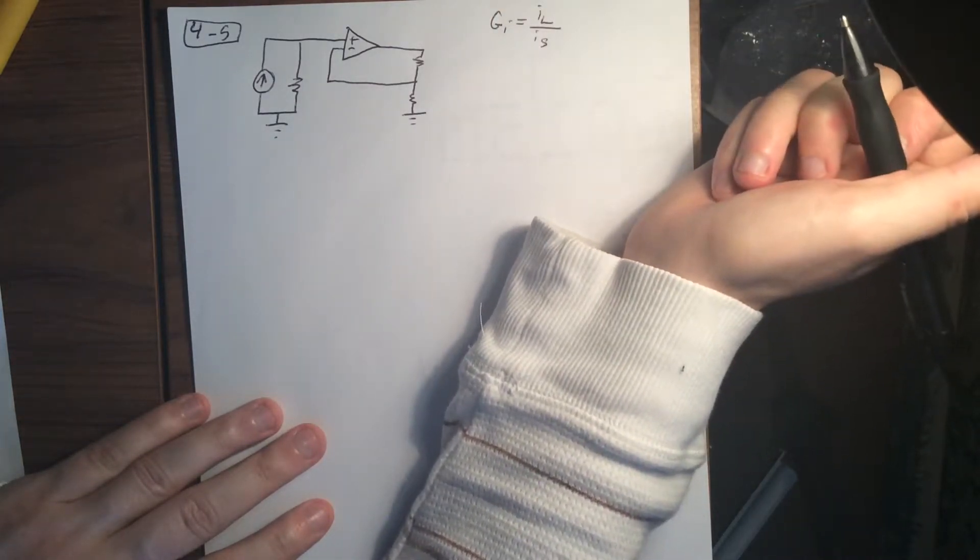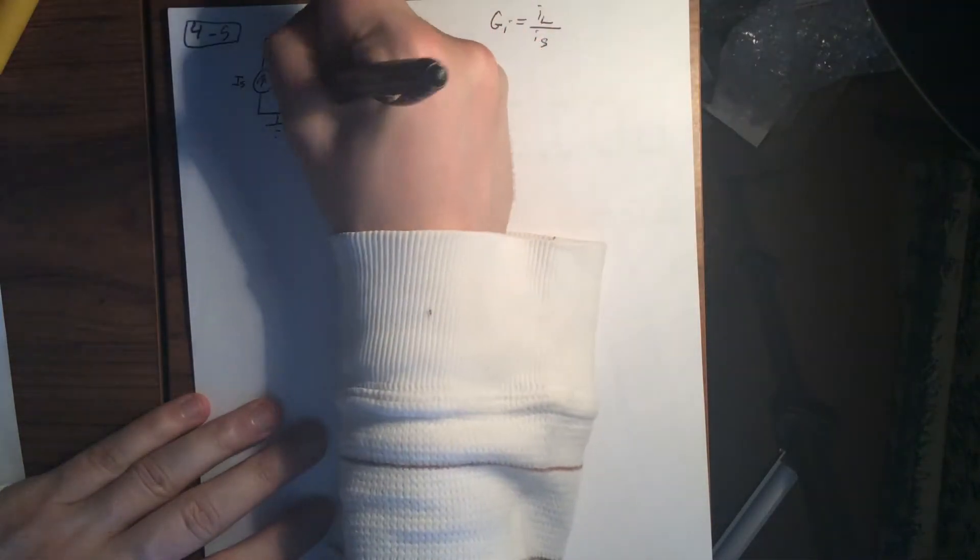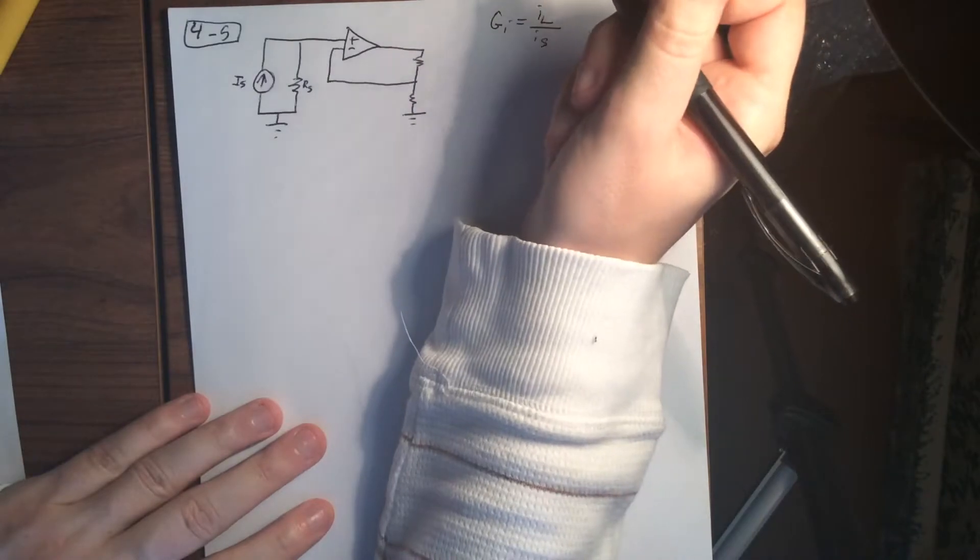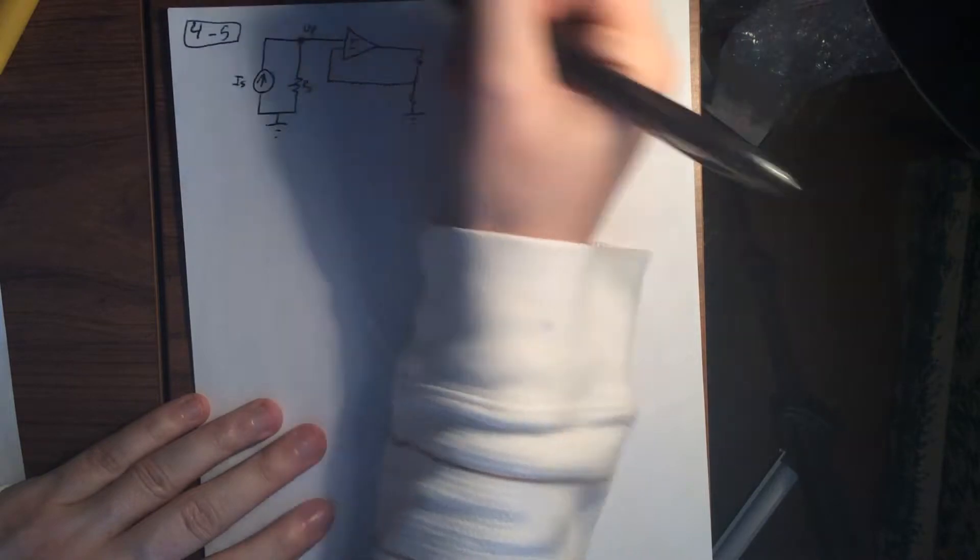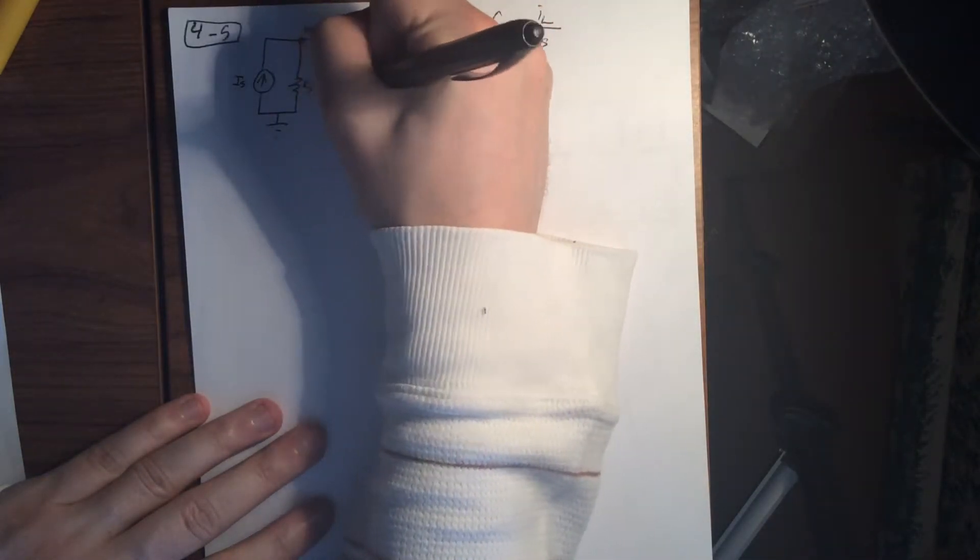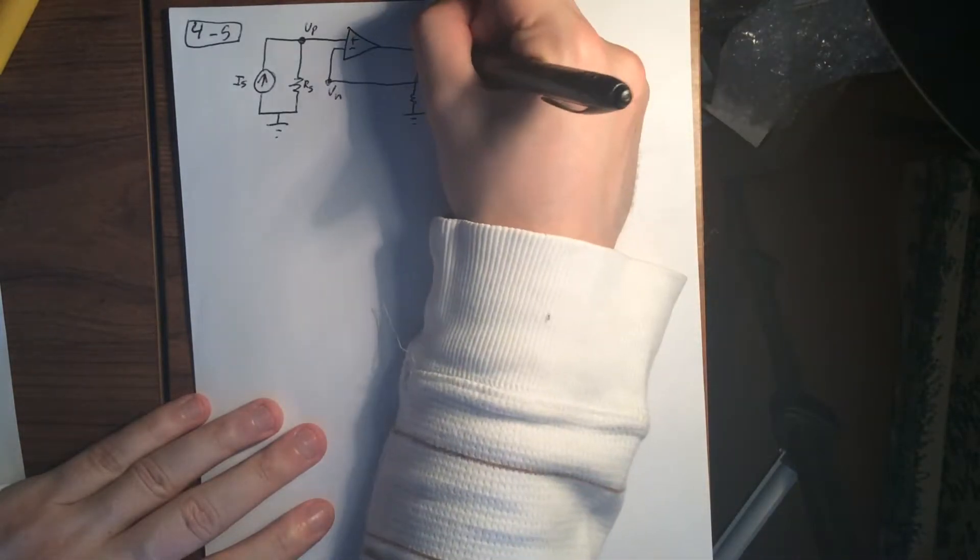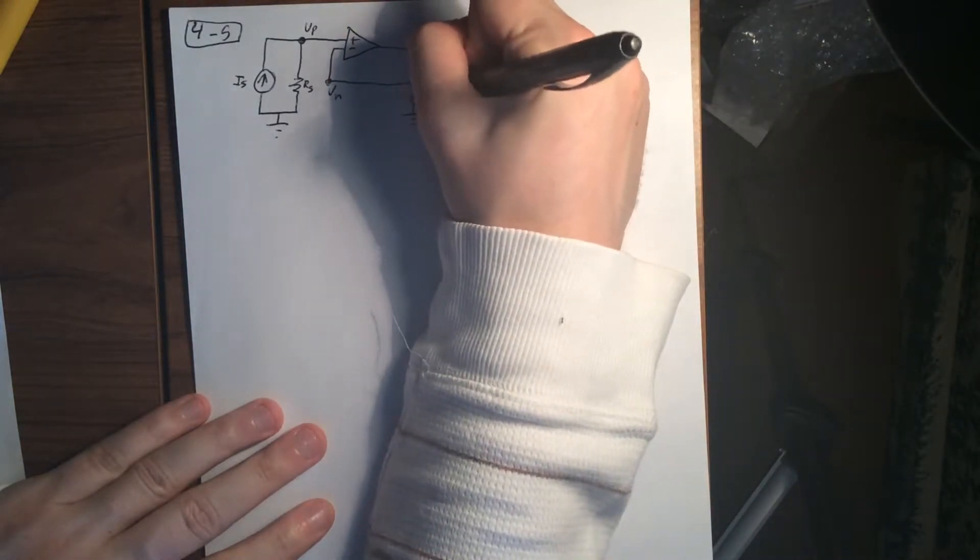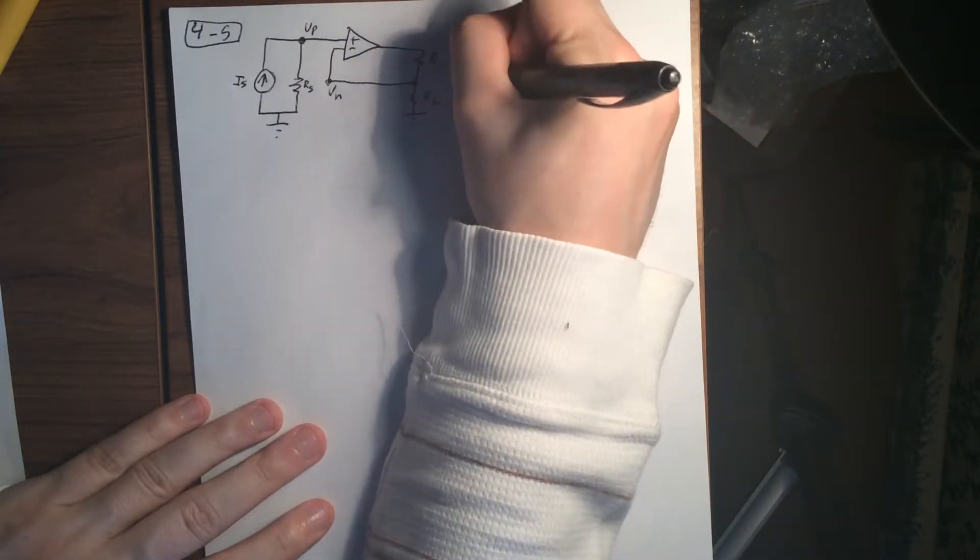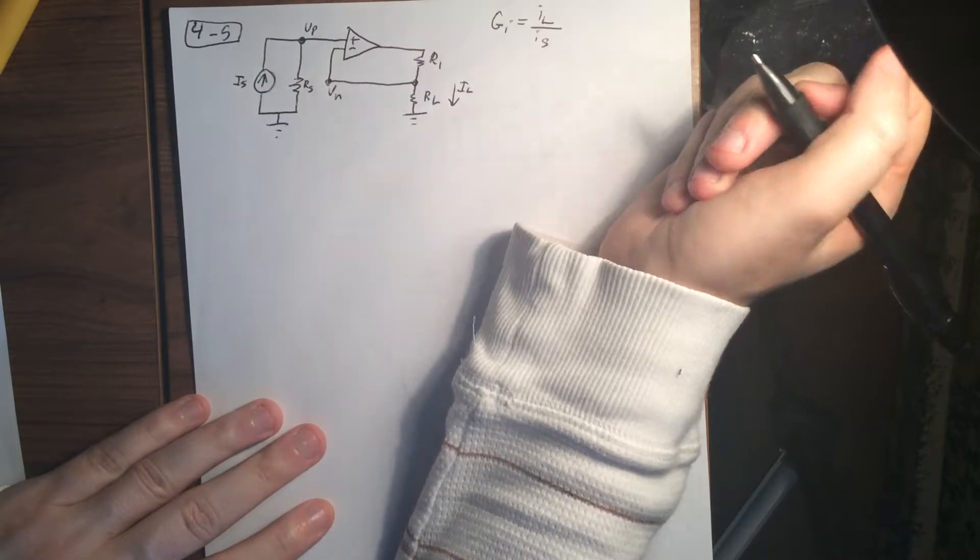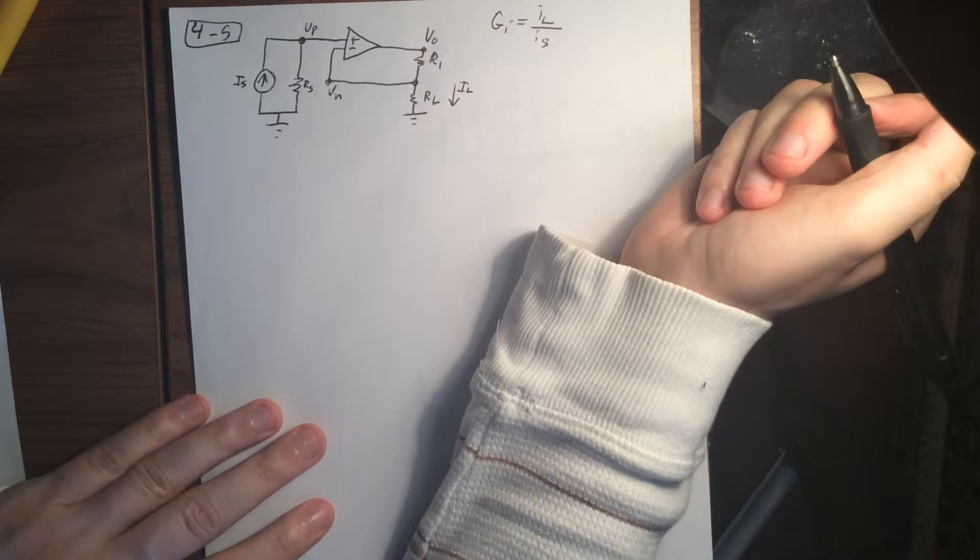And let's see what else we've got for this one. We've got this is IS. This is RS. It's saying this node here is VP. This node here is VN. And then this is R1. And this is RL. And then this is a node here. And we also have IL going down on the output. And we also have V0 up there.